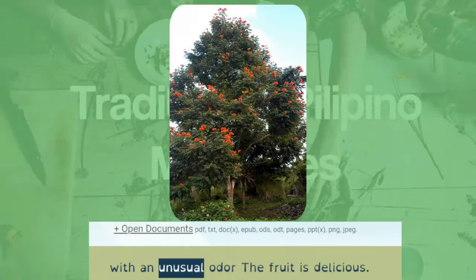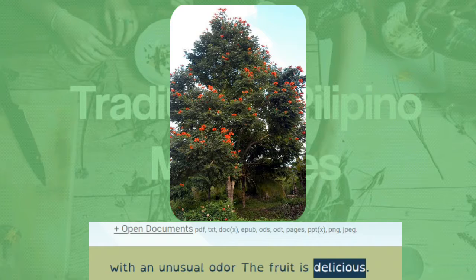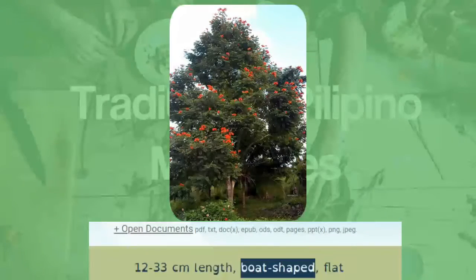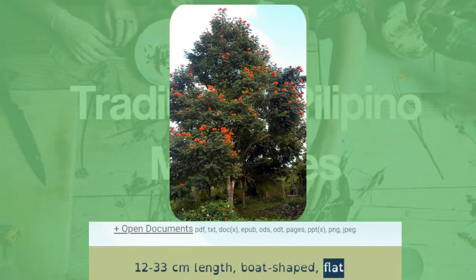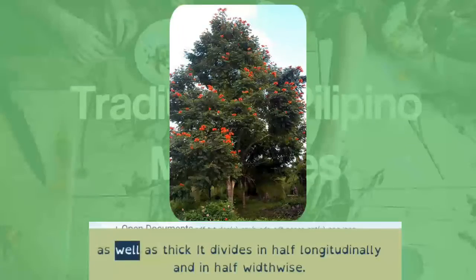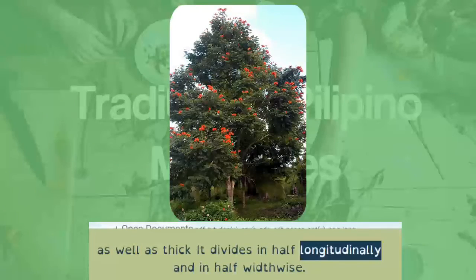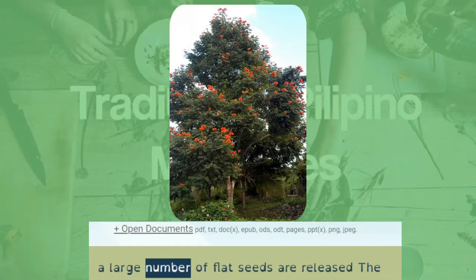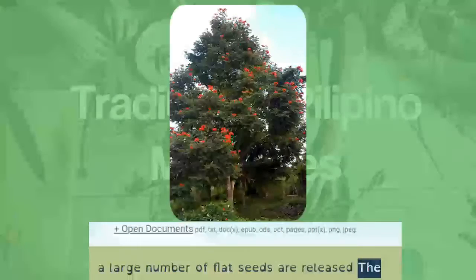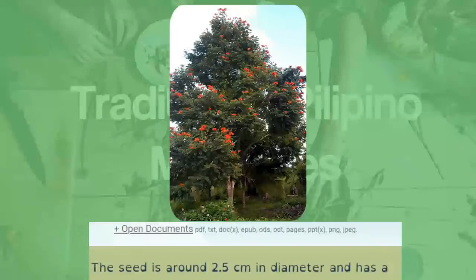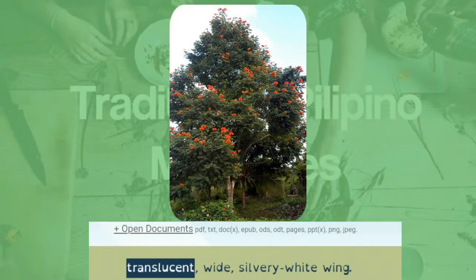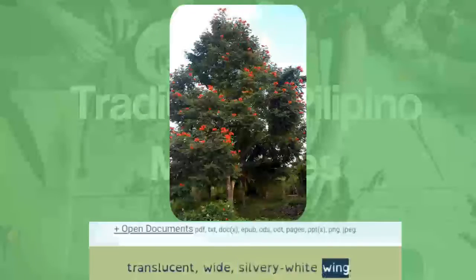The fruit is 12 to 33 cm in length, boat-shaped, and flat, as well as thick. It divides in half longitudinally and widthwise, releasing a large number of flat seeds. Each seed is around 2.5 cm in diameter and has a translucent, wide, silvery white wing.